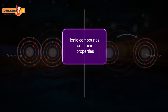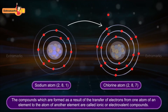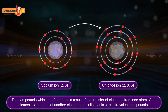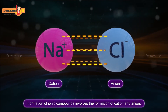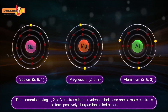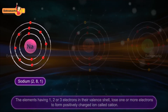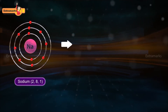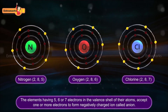The compounds which are formed as a result of the transfer of electrons from one atom of an element to the atom of another element are called ionic or electrovalent compounds. Formation of ionic compounds involves the formation of cation and anion. The elements having one, two, or three electrons in their valence shell lose one or more electrons to form a positively charged ion called a cation. For example, sodium atom loses an electron to acquire a stable electronic configuration and forms a sodium ion.